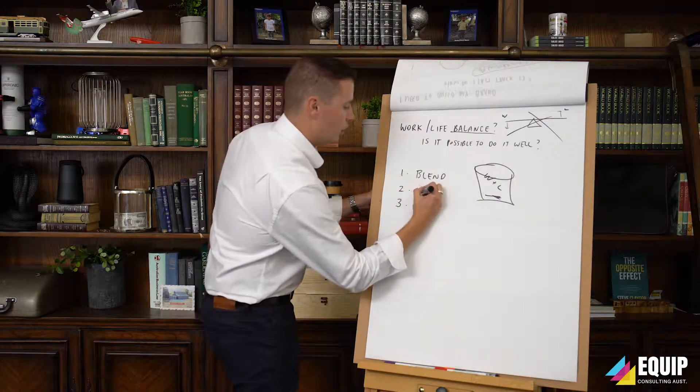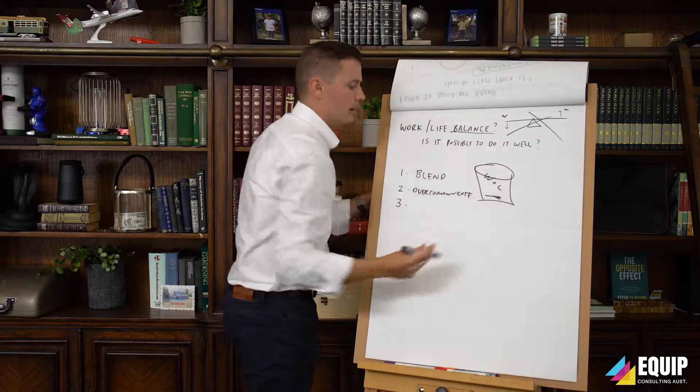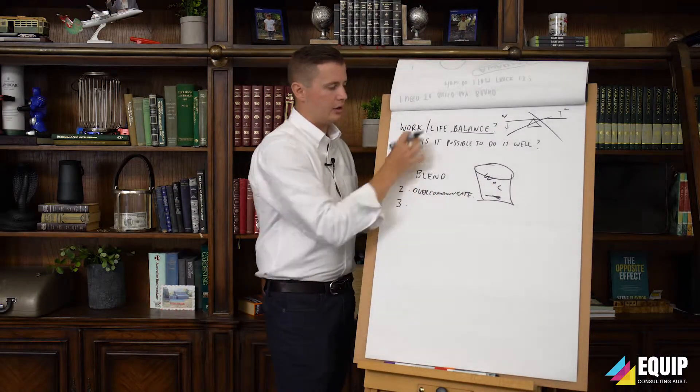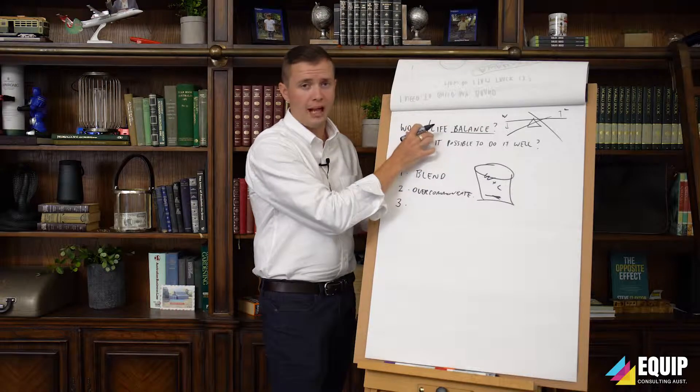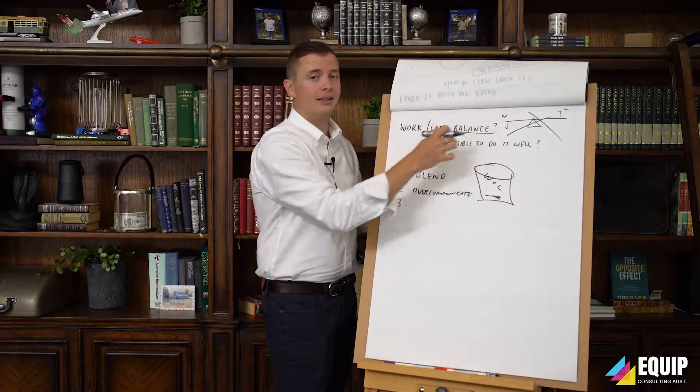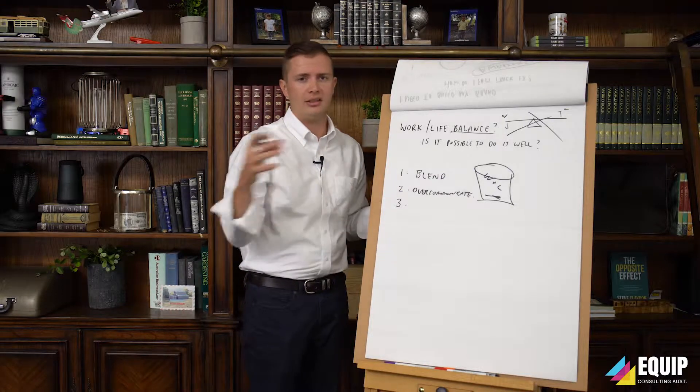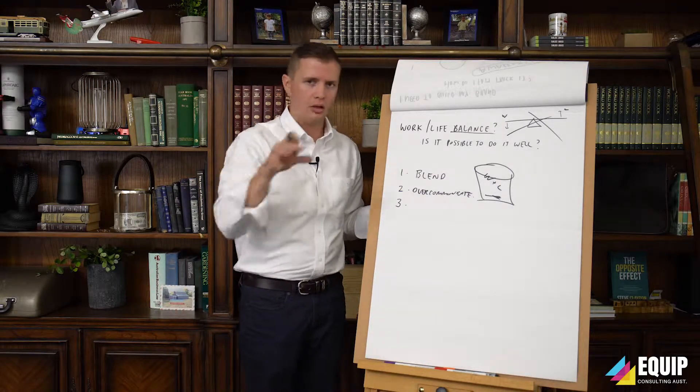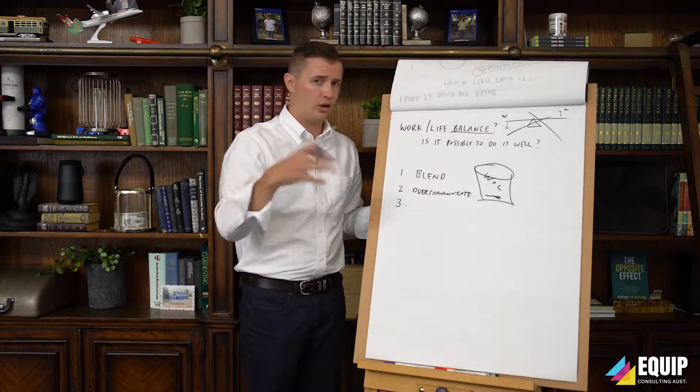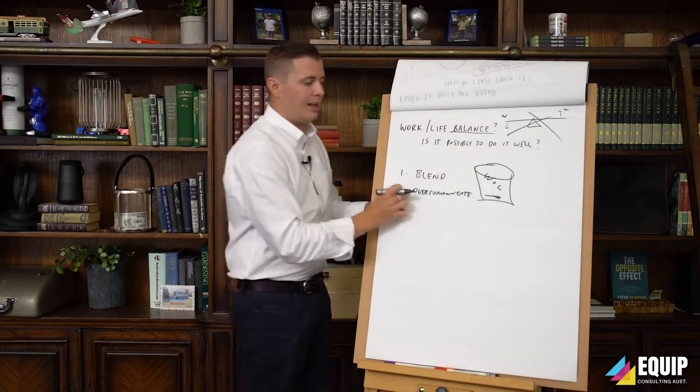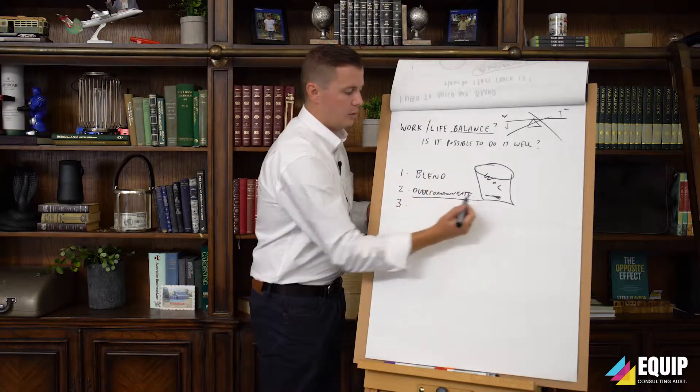Number two is you need to over communicate. This is a big one. Any time, any form of relationship breakdown because typically what happens here, the result of the evidence of poor work-life balance is relationship breakdown. Either the relationship isn't strong with your employees, your team, whatever it may be, your work life, or your relationship isn't strong at home with your kids, with your wife, with your husband. So the way that you overcome that is you need to over communicate.